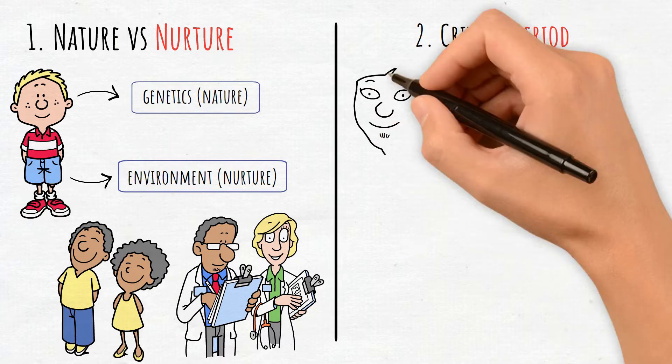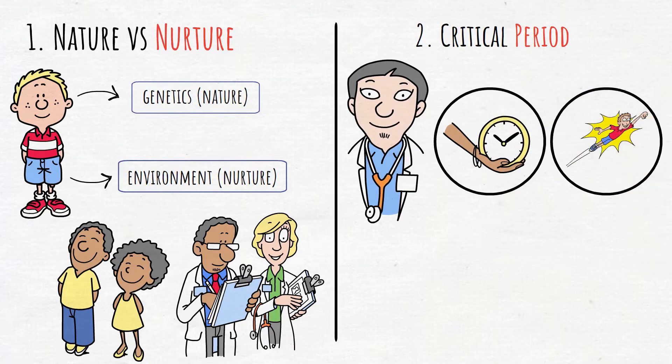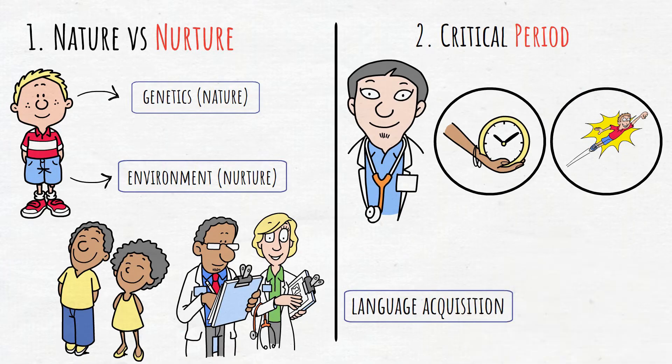2. Critical Period. Developmental psychologists argue that certain stages of development must occur within specific time frames to ensure proper growth. For example, language acquisition has a critical period in early childhood.